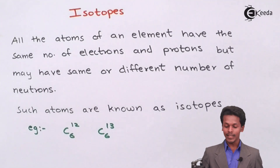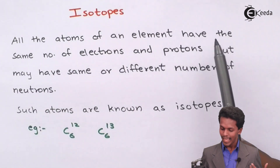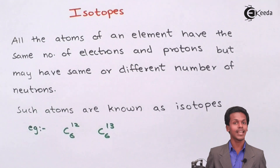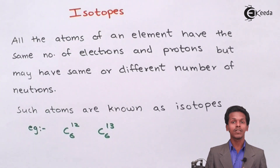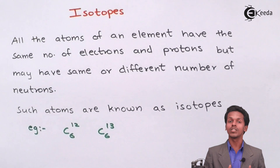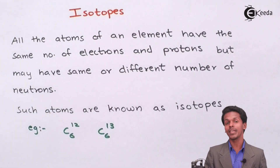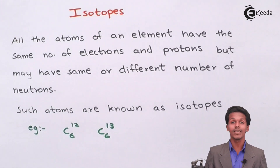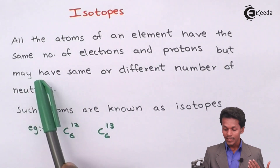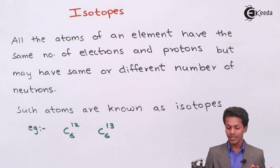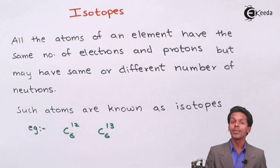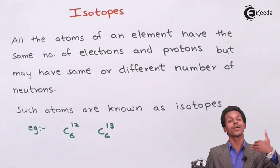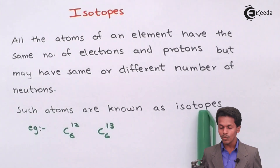Talking about isotopes: all the atoms of an element have the same number of electrons as well as the same number of protons. Electrons are negatively charged and protons are positively charged, so to maintain electrical neutrality the number of electrons and protons must be the same. However, the neutron, which has no charge, can be present in more or less quantity. So an atom may have the same or different number of neutrons compared to the number of protons. Such types of atoms are known as isotopes.